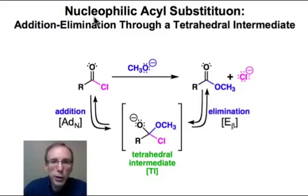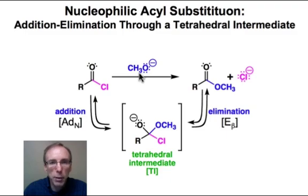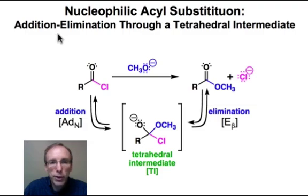The simplest mechanism for nucleophilic acyl substitution is a two-step sequence that generally takes place under basic conditions with a good nucleophile, like methoxide, and a carbonyl that has a good leaving group, like chloride. This two-step sequence is commonly referred to as addition-elimination through a tetrahedral intermediate.